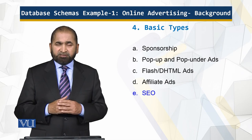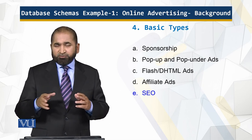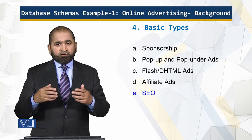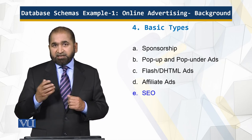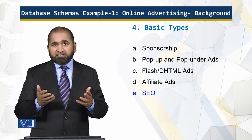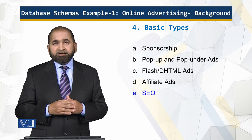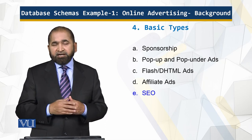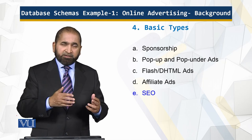The basic types of online advertisements: first is sponsorship, where a company pays to cover all or part of a website or its pages — it is a classical model but can be for the whole website or just part of it. Then there are pop-up and pop-under ads, which come from the traditional television domain — they pop up and you can also close them. Flash and dynamic HTML ads are more attractive and more engrossing. Finally, affiliate ads are based on passing messages and affiliations, with codes that generate money for those sponsors.